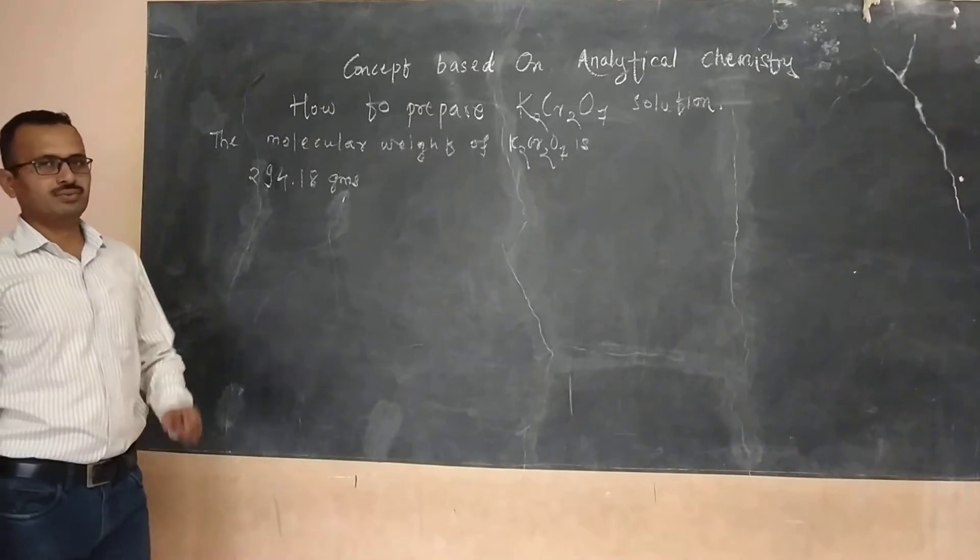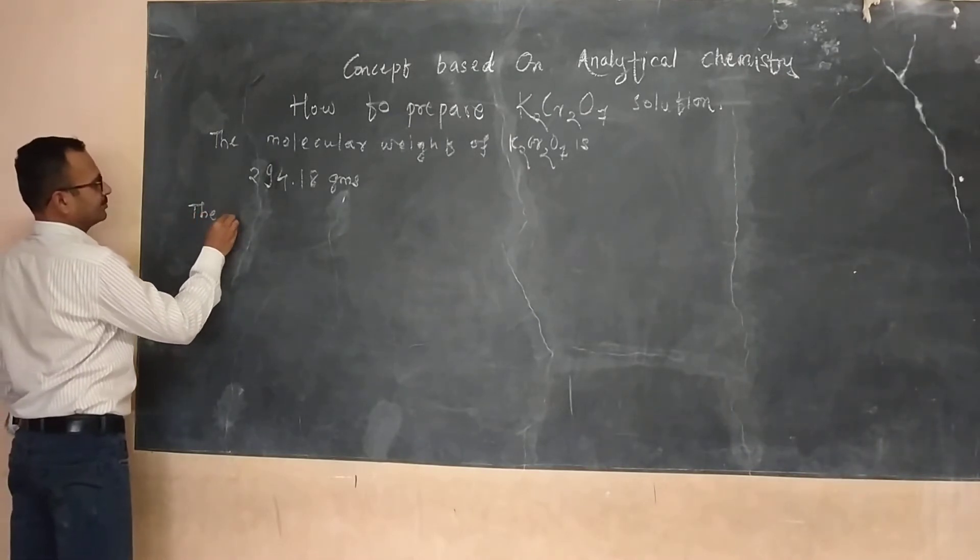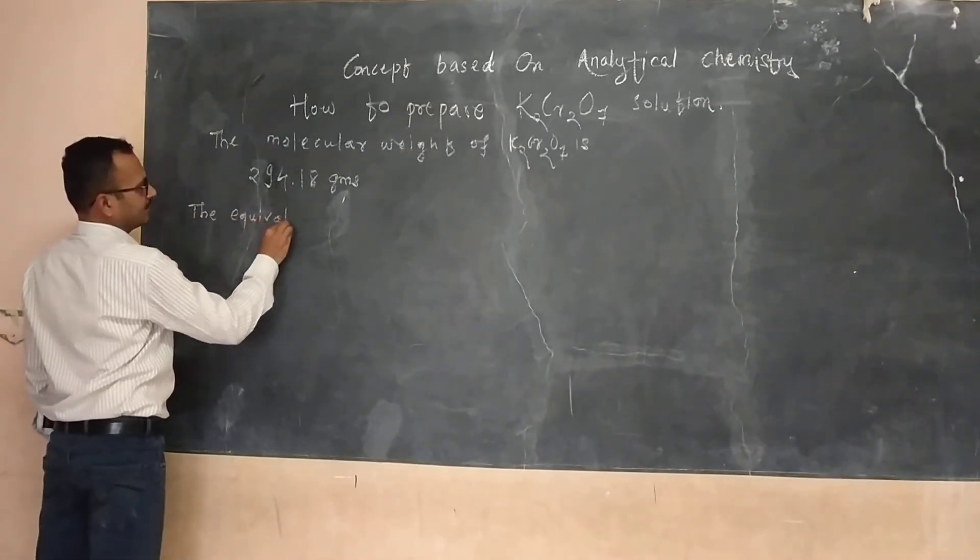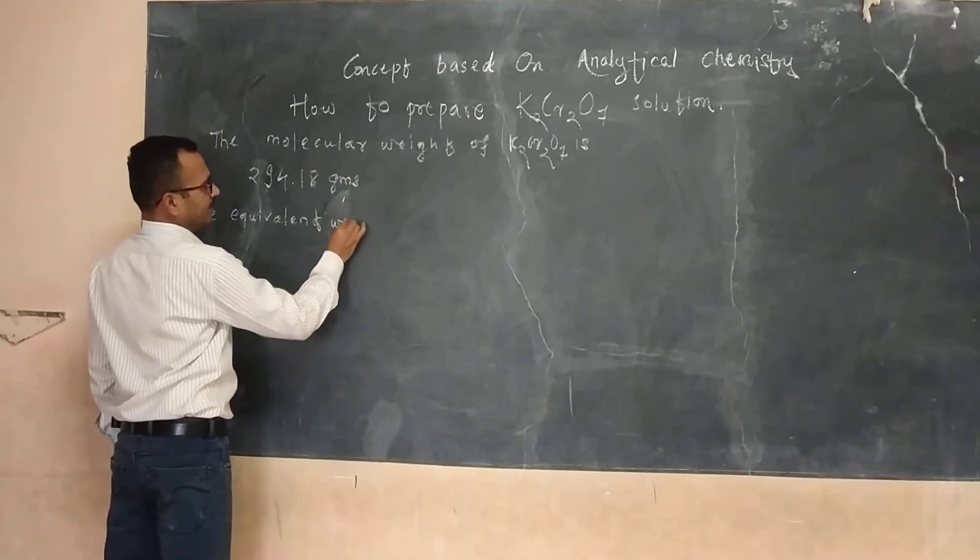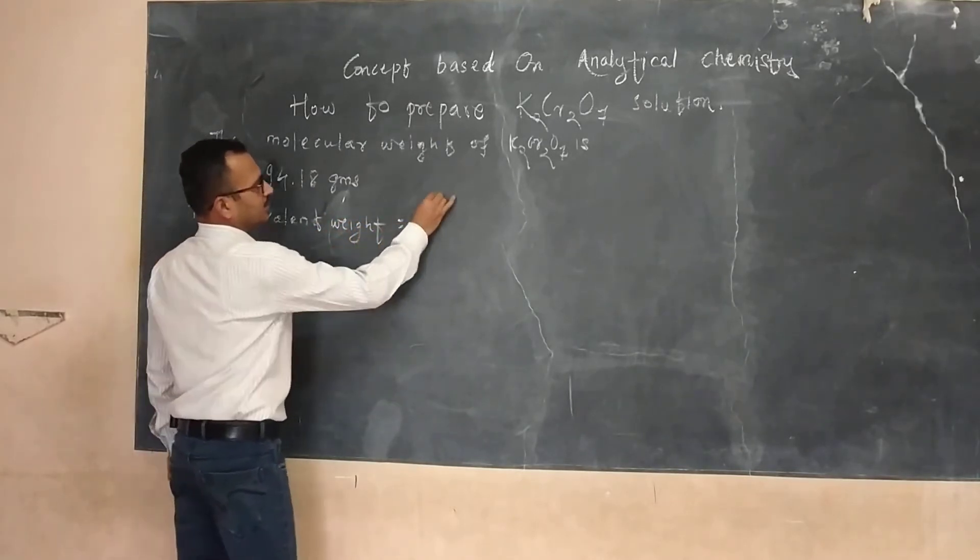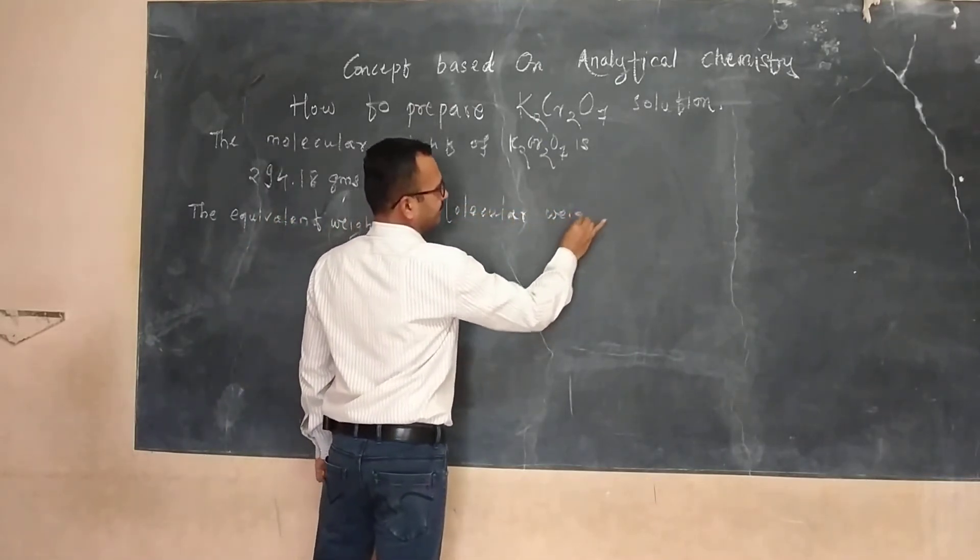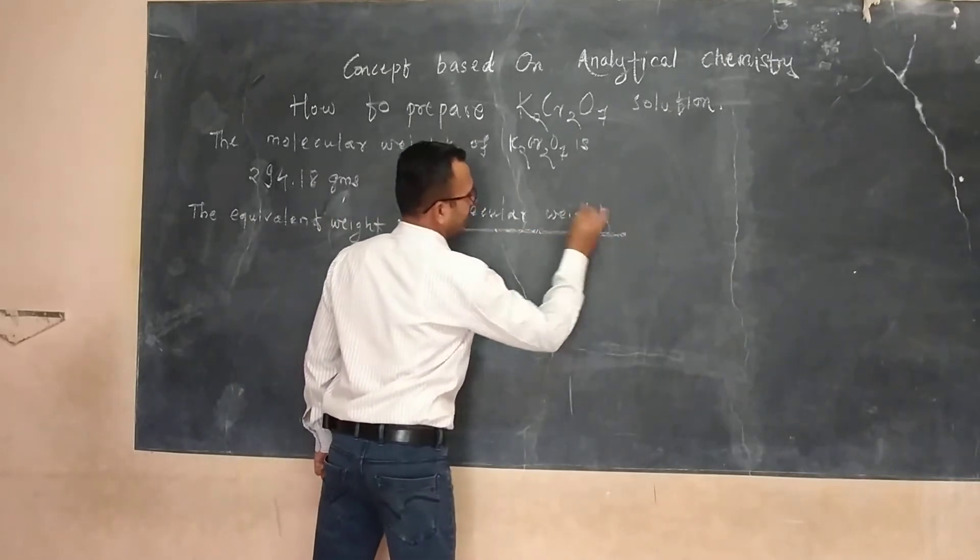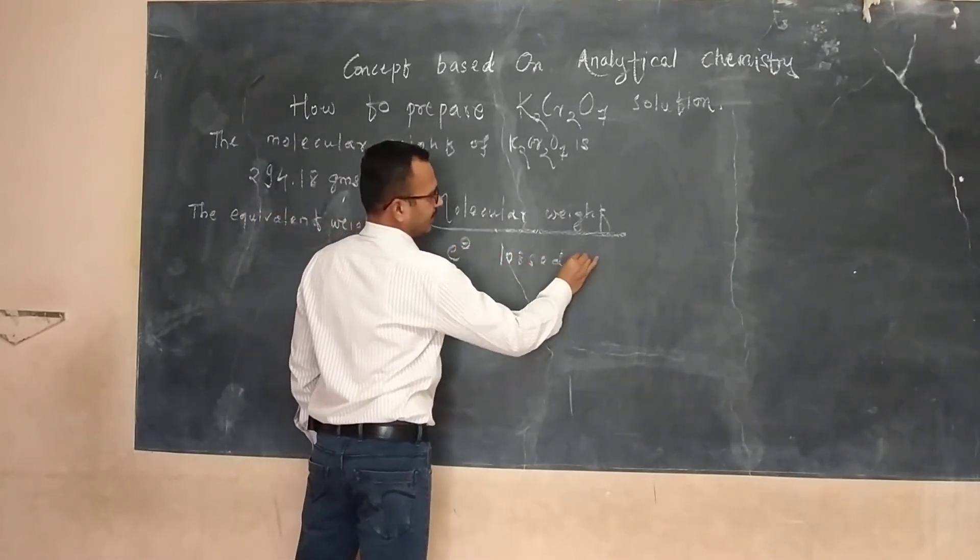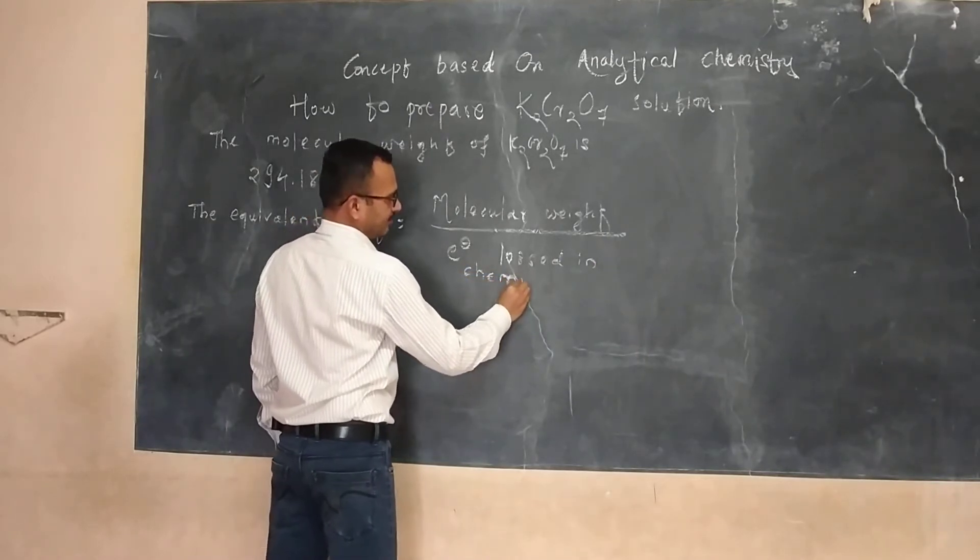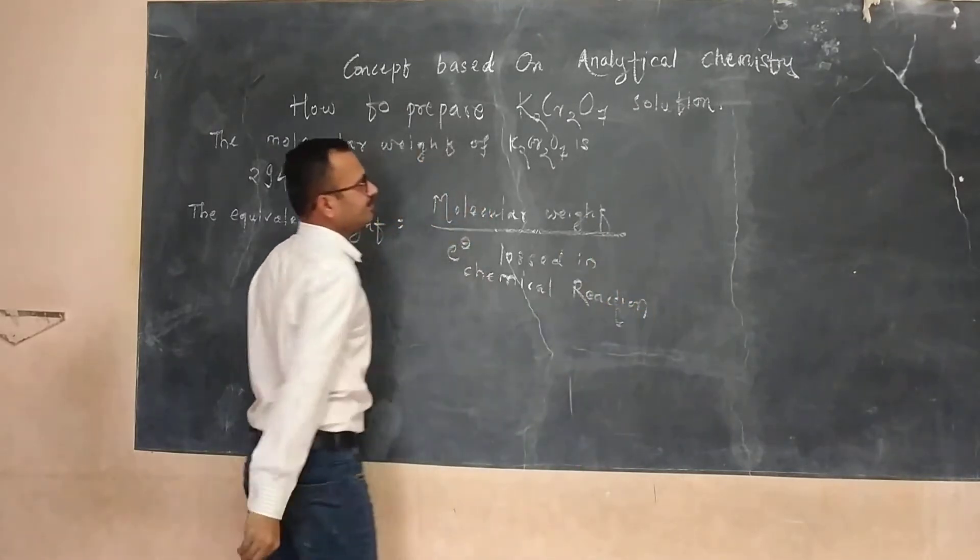Now, for the oxidizing in nature, the molecular weight has the concept of equivalent weight. The equivalent weight is equal to molecular weight divided by electron loss in the chemical reaction.